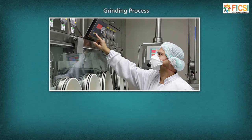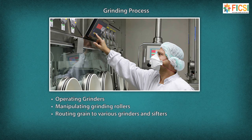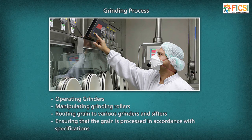Grinding Process: A grain mill operator performs the following tasks during the grinding process: operating grinders to reduce the size of processed grain, manipulating grinding rollers using hand tools, routing grain to various grinders and sifters, and manipulating machinery by filling the grain and ensuring it is processed in accordance with specifications.